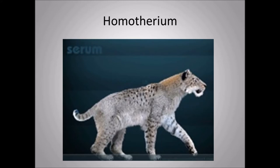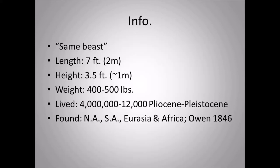This picture is a little bit blurry, but this is a possibility of what Homotherium would actually look like. Homotherium means 'sane beast.' Length: 7 feet, 2 meters. Height: 3 and a half feet, approximately a meter. Weight: 400 to 500 pounds. It lived 4 million to 12,000 years ago in the Pliocene and Pleistocene. Found in North America, South America, Eurasia, and Africa, and it was described by Owen in 1846 — and I'm guessing this is going to be Sir Richard Owen.